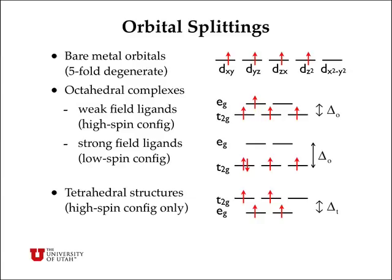On the other hand, strong field ligands can cause the splitting between the two groups of orbitals to be large compared with the electron pairing energy. In that case, after you fill the t2g orbitals with one electron each, the fourth electron actually gets paired in a t2g orbital — and the fifth and sixth as well — before you start putting unpaired electrons in the eg orbitals.